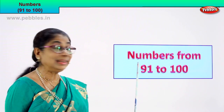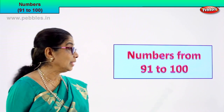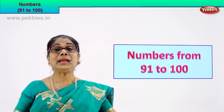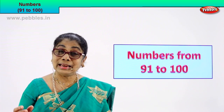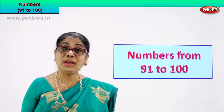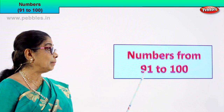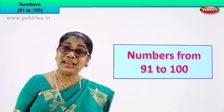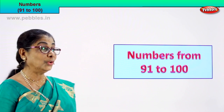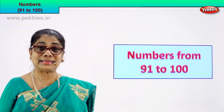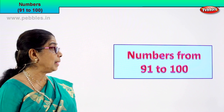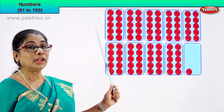Hi children, let's count from numbers 91 to 100. How do we count? There are lovely red circles in boxes. We will count the numbers from 91 to 100. It's a very interesting exercise. I want you to enjoy it.